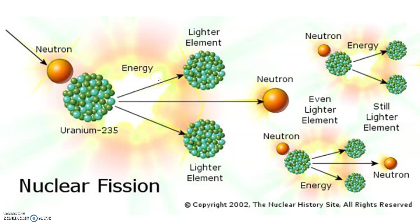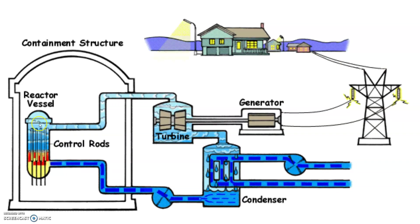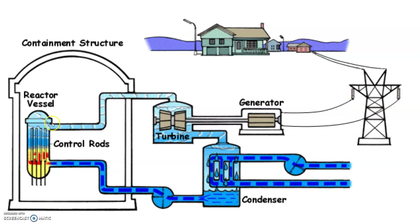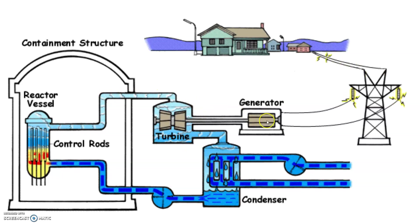When it splits into the smaller pieces, it releases energy. This energy is used in a system that looks just like the one used with fossil fuels. That energy is released into water nearby, which becomes really hot and turns into steam. That steam turns the turbine, which spins the generator.